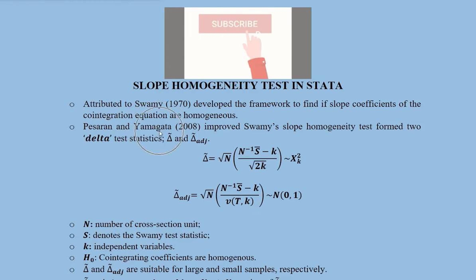Later, Pesaran and Yamagata in 2008 improved this Swamy's slope homogeneity test and they formed two delta tests, delta tilde and delta tilde adjusted. These are the formulas of these two statistics.